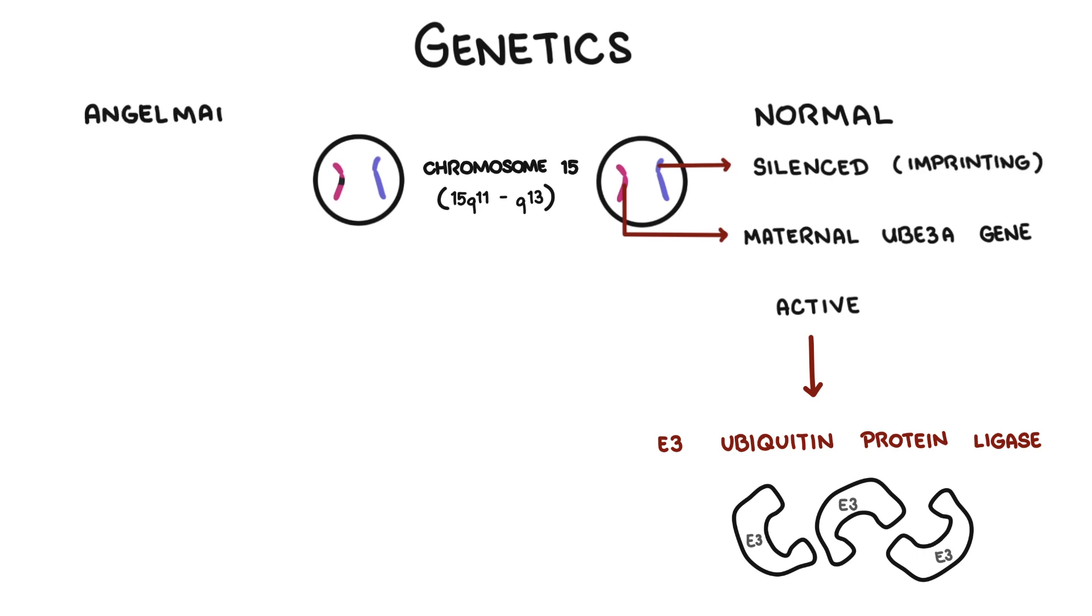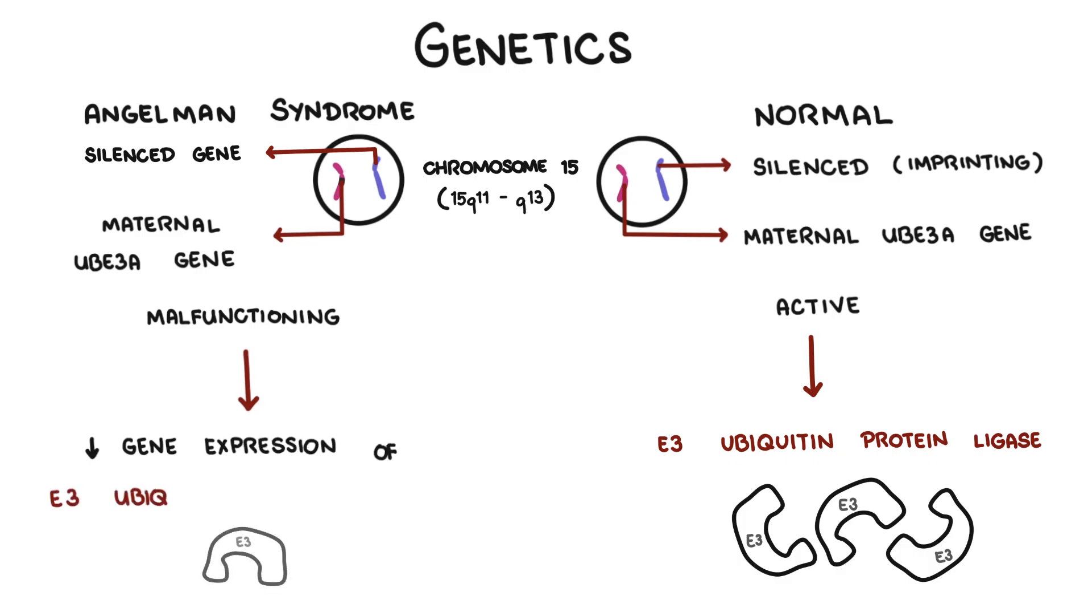In Angelman syndrome, the maternal copy of the gene is malfunctioning, resulting in deficient gene expression of E3 ubiquitin protein ligase. The E3 ubiquitin protein ligase is a critical enzyme involved in proteasome-mediated protein degradation, which is essentially an important function for cells to degrade proteins.